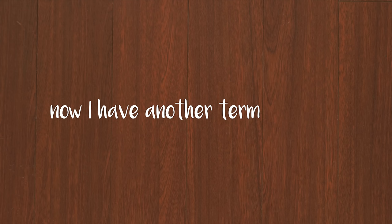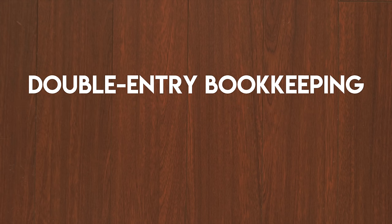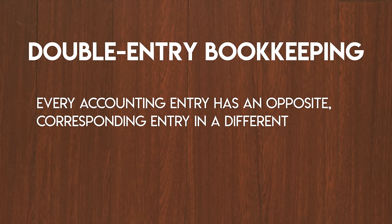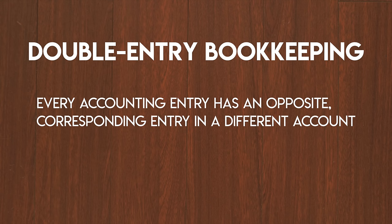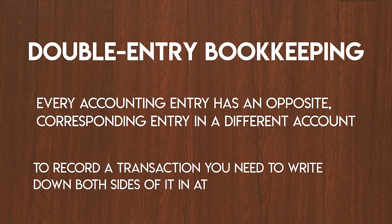Okay so now I have another term for you, and we touched on this one last week: double entry bookkeeping. This means that every accounting entry has an opposite corresponding entry in a different account. In the context of T-accounts this means that to record a transaction you will need to write down both sides of it in at least two T-accounts. You might want to pause the video now and grab a tea or a coffee to get in the zone, because I'm about to take you through some examples of double entry bookkeeping with T-accounts.